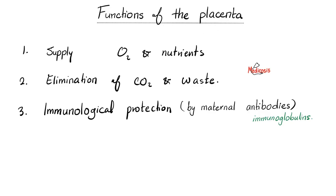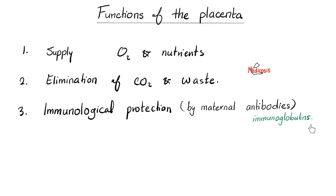Functions of the placenta: supply oxygen and nutrients to the baby; eliminate carbon dioxide and waste products from the baby's body; and provide immunological protection by maternal antibodies, also known as immunoglobulin, such as IgG.